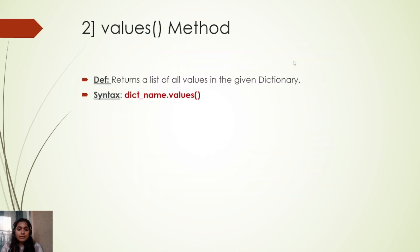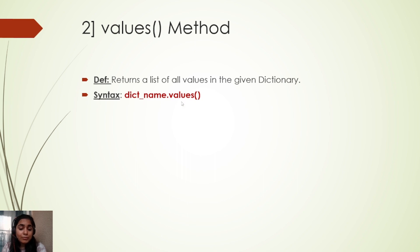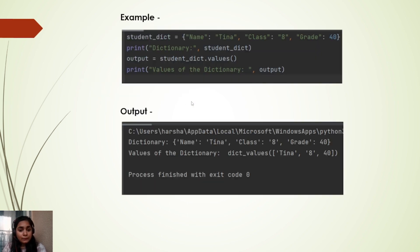The second method is the values method. Just as the first method gave us a list of keys, using the values method we will be getting a list of all the values present in the dictionary. The syntax is: dictionary_name.values().